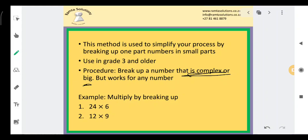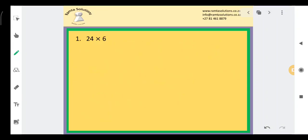In our examples, we will try multiplying by breaking up: 24 multiplied by 6, and 12 multiplied by 9. Now, 24 multiplied by 6—the one that is complex for me is 24. I think if I were to say 24 by 6, I don't know when I'm gonna finish. I know 6 by 6, but as for 24 I'm not sure.